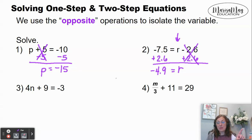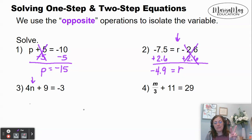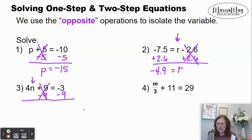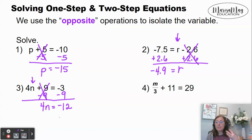One, the variable is being multiplied by 4, and then it's being added by 9. So we have to do the opposite, and we do the opposite of the adding 9 first. The opposite of adding 9 is to subtract 9, so we'll do that from both sides of the equation. The opposites cancel, but we're not left with just n — we're left with 4n. Now we have to undo the multiplying by 4. The opposite of multiplying by 4 is to divide by 4. We divide by 4 on both sides, those opposites cancel, and I'm left with n equals negative 3.